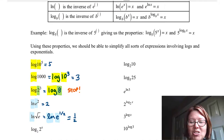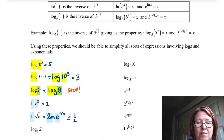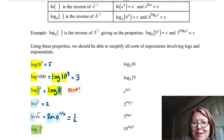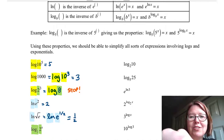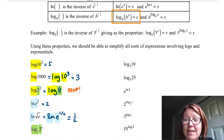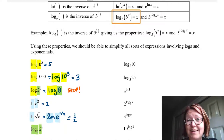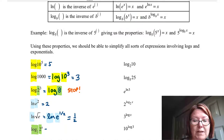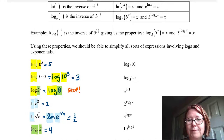Next we have log base 2 of 2 to the 4th. The log has a base of 2 and 2 to the 4th also has a base of 2, so those match. We apply log base b of b to the x equals x, and log base 2 of 2 to the 4th equals 4.